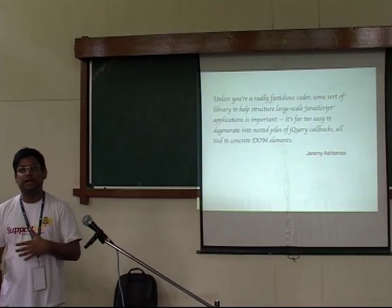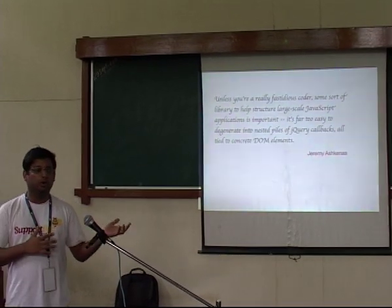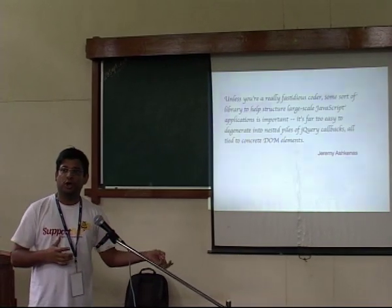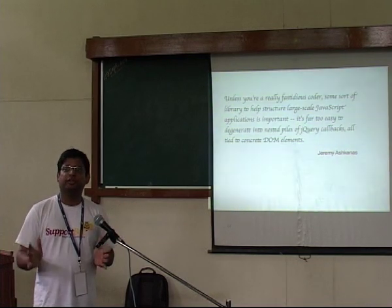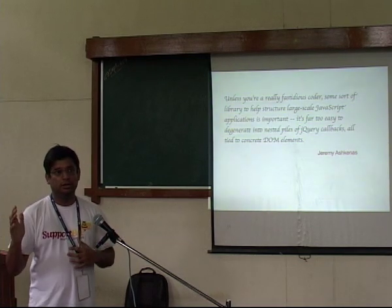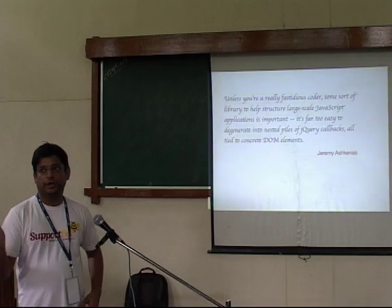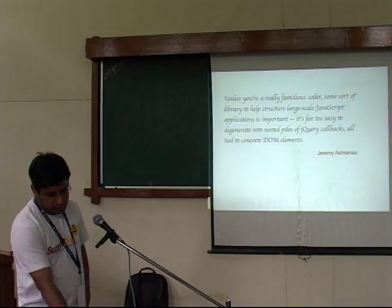That's the biggest problem if you're using jQuery to build big applications — you'll be writing so many callbacks and events, and they'll all be tied to your DOM. If you change the class name, it'll all just sort of break down. That's where something like Backbone comes in. There are a lot of other alternatives like Sproutcore, but we'll just dive into Backbone and keep it short so you can ask questions.